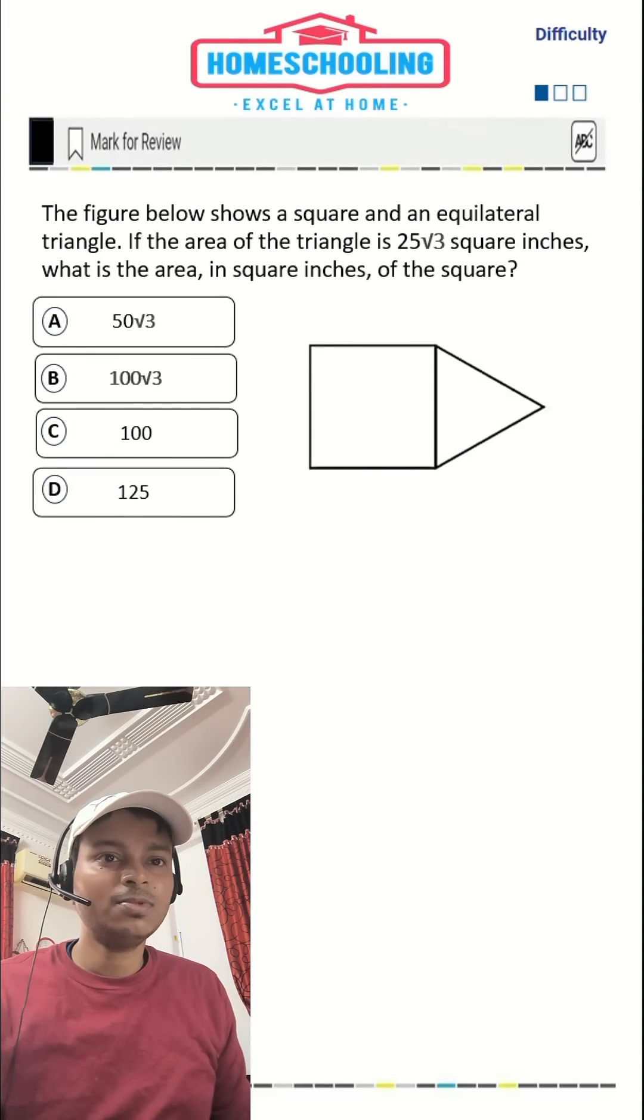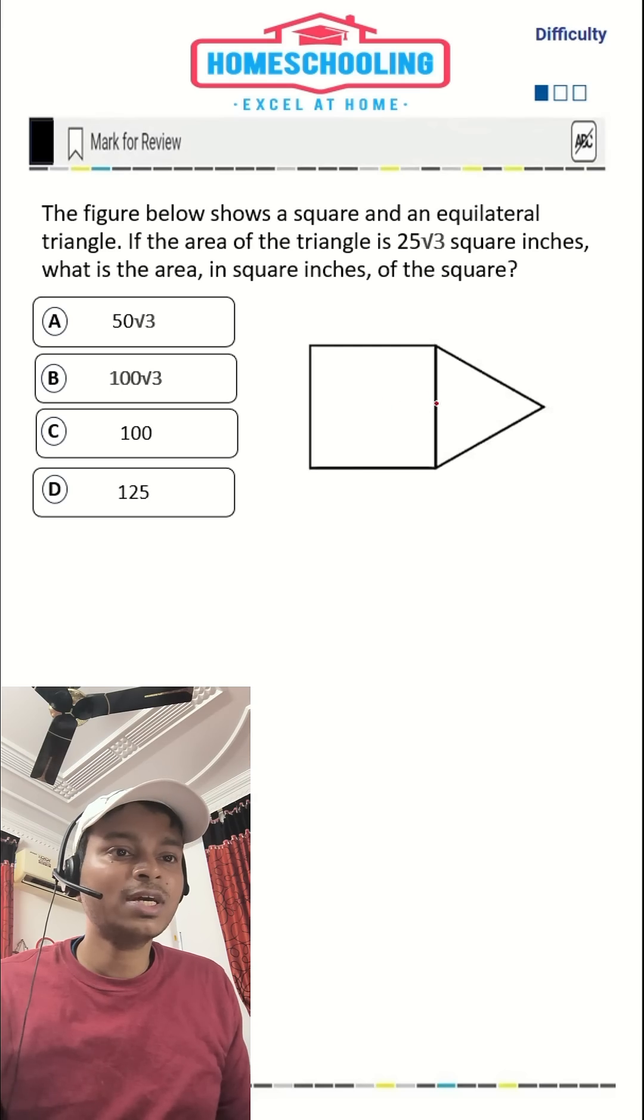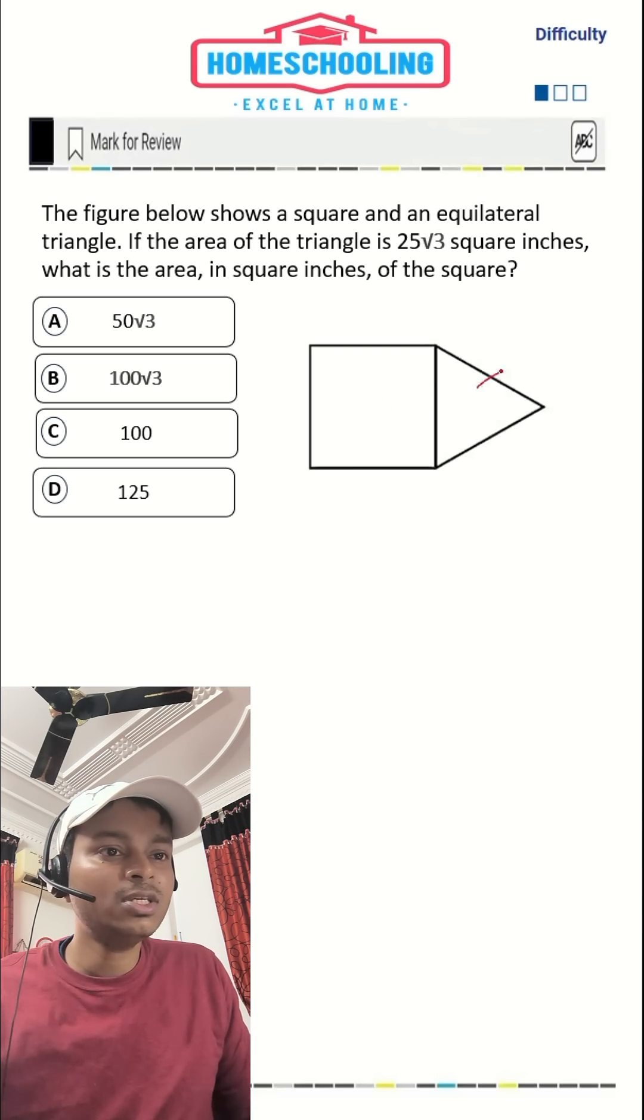This is one of the easiest SAT math problems. In this question we have an equilateral triangle on one of the sides of the square, and the area of this equilateral triangle is 25√3 square inches.